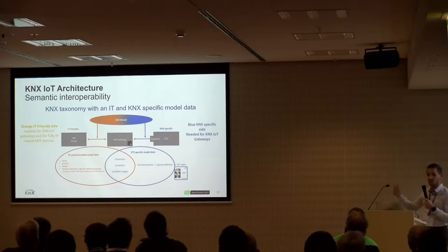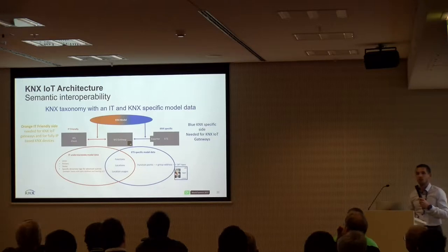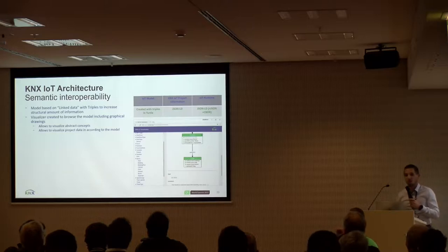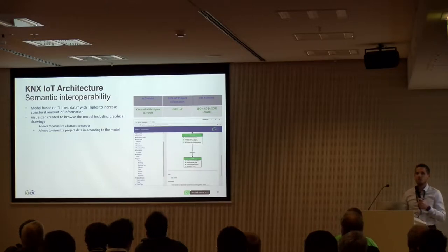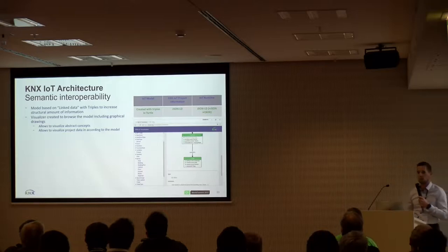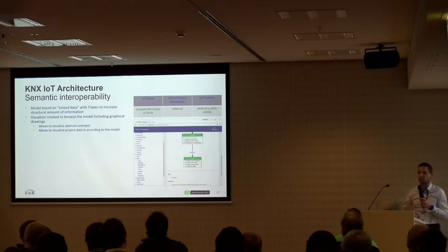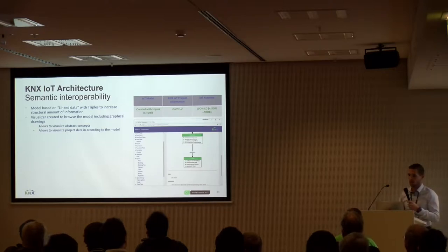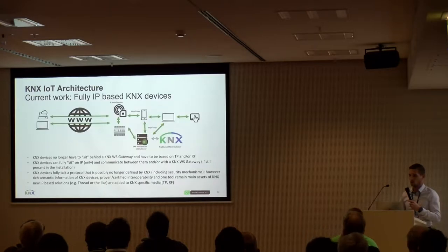This is why we are working on a semantic model. We started from the information already available in ETS — that's the blue side of the model. On the orange side we are making higher-level abstractions of the functionality exposed in a KNX installation. To do so we are not inventing everything on our own; we leverage linked data, which has many use cases and is valuable for expressing semantics. We use the standardized OWL and RDF solutions, and we have created a model expressing KNX content in JSON-LD and CBOR messages.